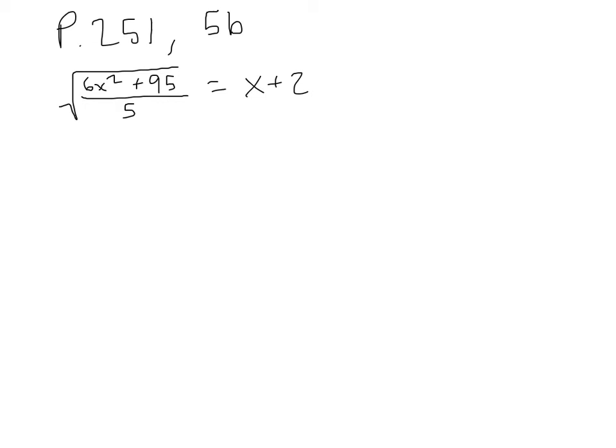So the first thing we want to do is get rid of that radical. In order to get rid of it, we square both sides. Squaring a square root makes it go away.